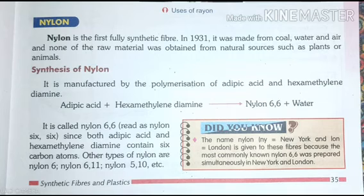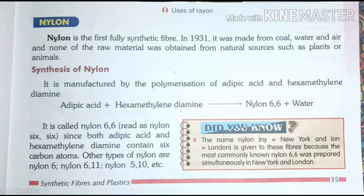There are different types of nylon such as nylon 6-6 and nylon 6-11. The name nylon is given to these fibers, and the most commonly known nylon 6-6 was named because it was prepared in New York and London.